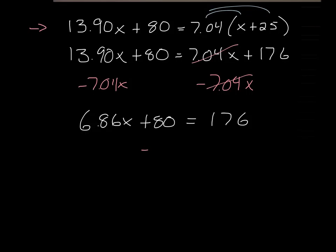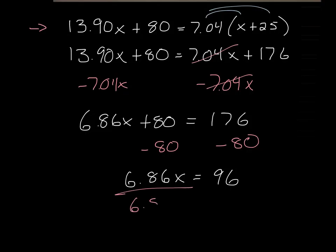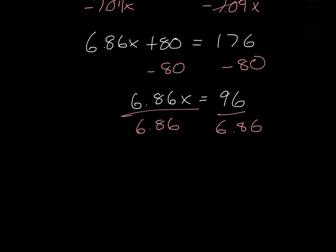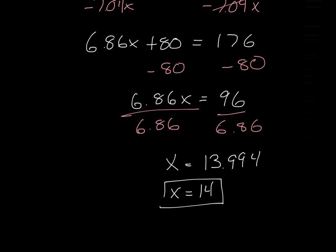Then I'm going to subtract 80 from both sides. So I'll get 6.86x equals 176 minus 80, which is 96. And then I'll divide both sides by 6.86 to get my x value. When I do that, I get just about 14 — x equals 13.994. We'll round to the nearest tenth, which rounds us up to 14. And so we have our x value.